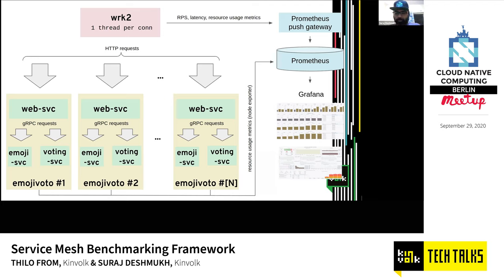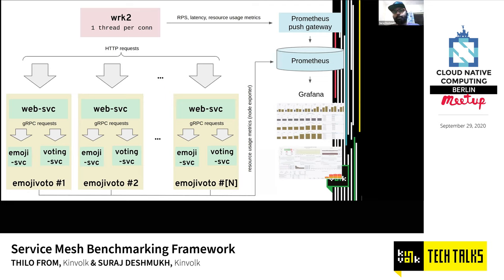Why push gateway? Prometheus has a pull mechanism for metrics. Something that is very short-lived like a Kubernetes job is hard to scrape — by the time Prometheus discovers the job and starts scraping, the job might have already died and you lose metrics. Push gateway acts as a stopgap solution where you push all your metrics to the push gateway and then Prometheus scrapes from it. Every leaf cluster has a Prometheus, and the root cluster scrapes from these leaf cluster Prometheus instances. This means we have metrics from all leaf clusters in one root cluster, so you can see metrics across various clusters to increase the statistical spread.